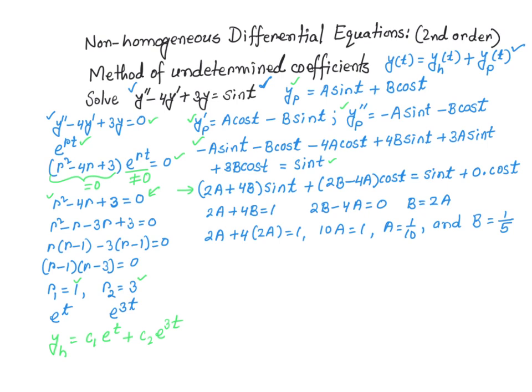There is one important thing here. On the right-hand side we have only sine of t, so I write sine of t plus 0 times cosine of t — this lets us compare apples to apples on both sides. On the right-hand side the coefficient of sine of t is 1, and on the left-hand side it is 2a plus 4b. So 2a plus 4b equals 1.